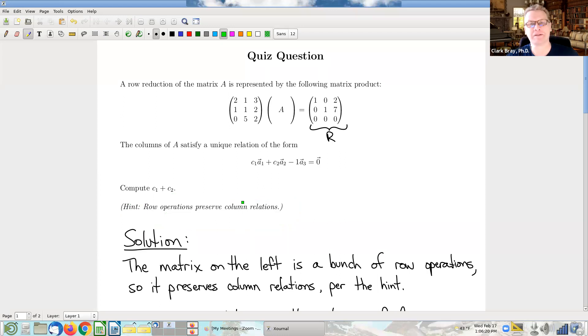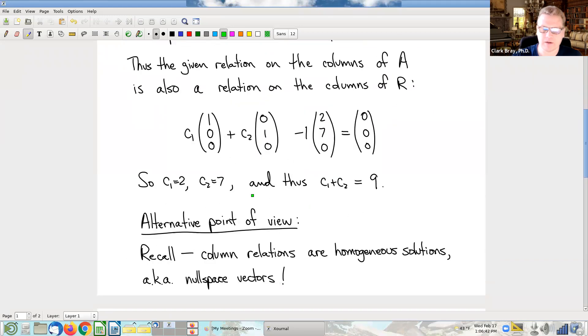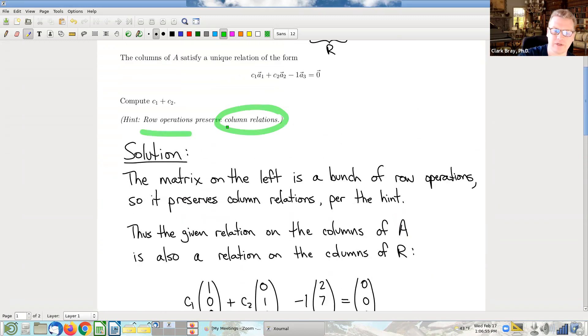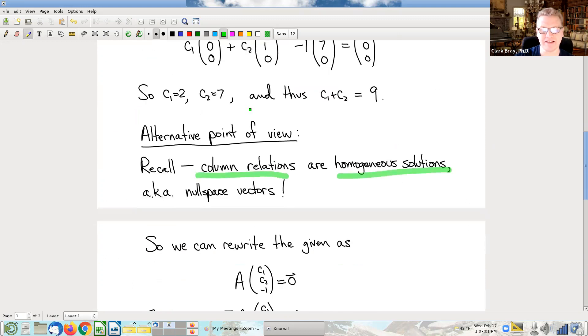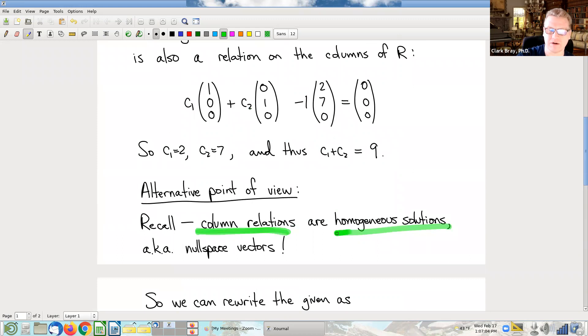So I want to show you now another solution to the same question, and better, worse, subjective, but certainly an interesting different solution. And by way of demonstrating a neat fact about these preserved column relations. So a different way to think about column relations, and that is this right here. Column relations are homogeneous solutions. In fact, if you look back in the lecture notes at where we first started talking about the fact that row operations preserve column relations, when we first wrote this down and proved it, we proved it by making this observation that column relations are homogeneous solutions.